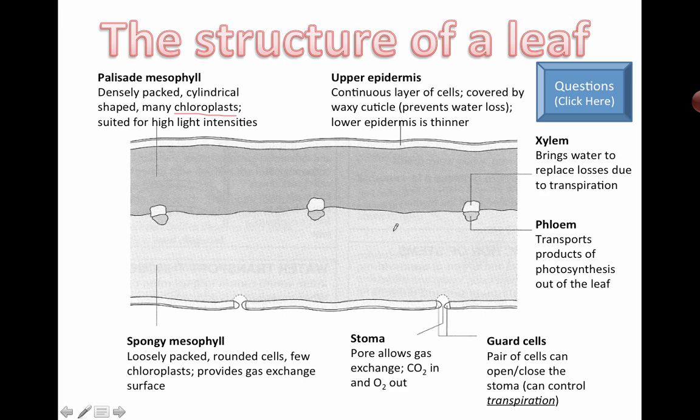Down here is still part of the leaf, but it's called the spongy mesophyll and you don't actually see the cells, but if you could see the cells, you could imagine that the cells are kind of spread out a little bit. In other words, there's a lot of space, air spaces, hence the name spongy mesophyll, basically.